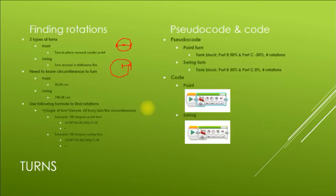Okay, finding rotations. So there's two types of turns - this is where we get into turning and we'll talk a lot more about this in class, but I do want you to see this here. You're gonna be doing a point turn and a swing turn. Point turn is a turn in place - you can see it's going around like that. A swing turn is swinging around a center point. The circumference of each turn for your bots is going to be 50.2 centimeters, and swing turn is 100.48 centimeters.